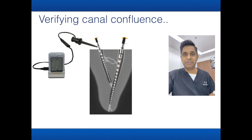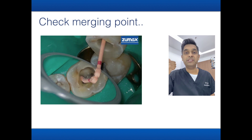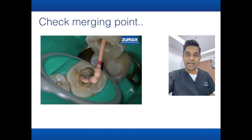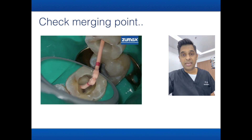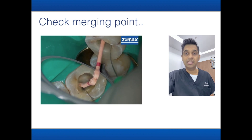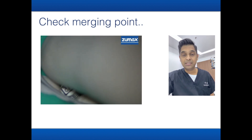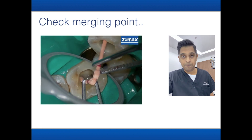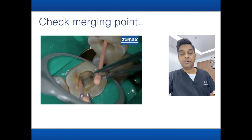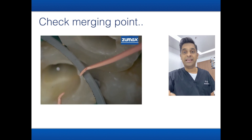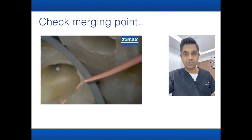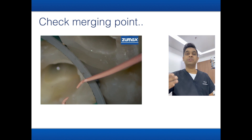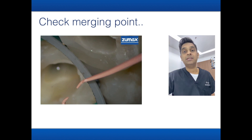Once you've verified confluence and shaped the mesial lingual canal, place your GP in the mesial lingual canal, then use your K-file in the mesial buccal canal. As the file passes through, it will create an indentation in the GP. When you remove the GP, you can clearly see the indentation and know exactly where the merging point is — this helps significantly with both shaping and obturation planning.